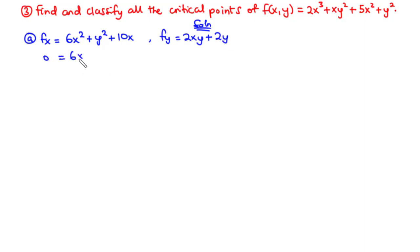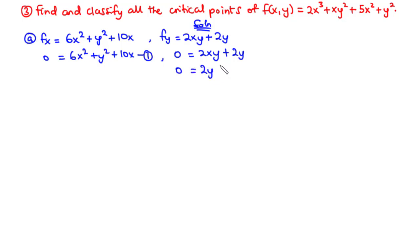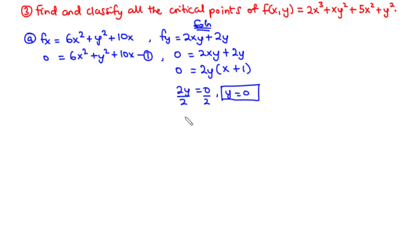So equation 1 is: 0 equals 6x squared plus y squared plus 10x. For the second equation: 0 equals 2xy plus 2y. We notice there is a common term of 2y, so we factor out 2y to get 2y(x + 1) = 0. This gives us y equals 0, and also x plus 1 equals 0, so x equals negative 1.